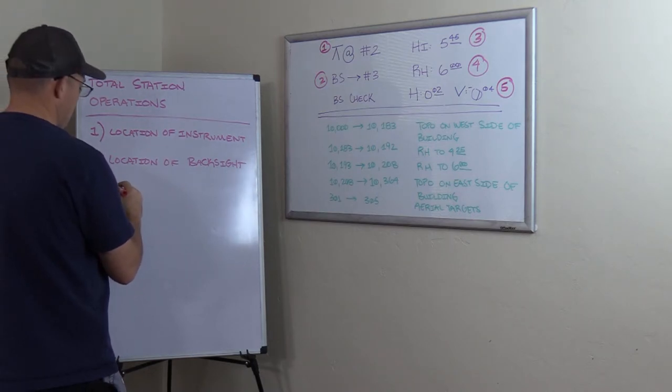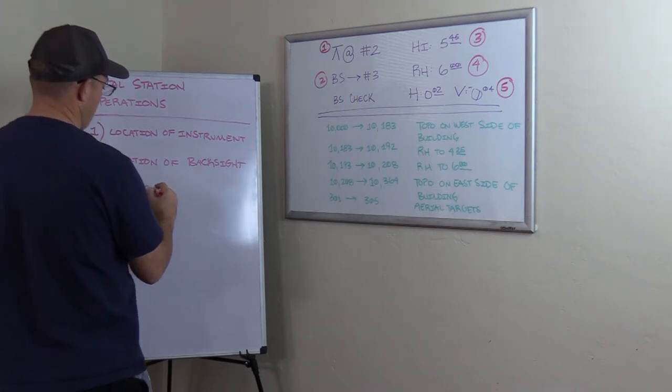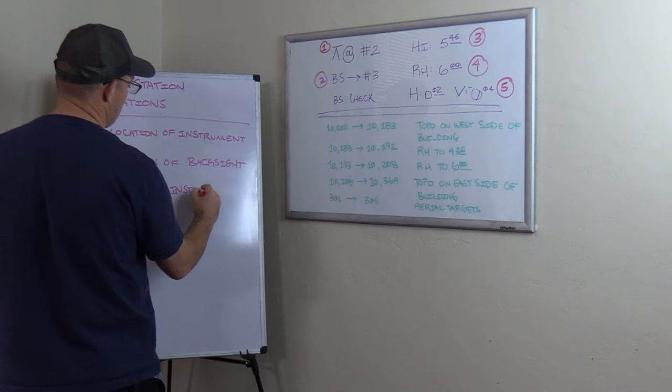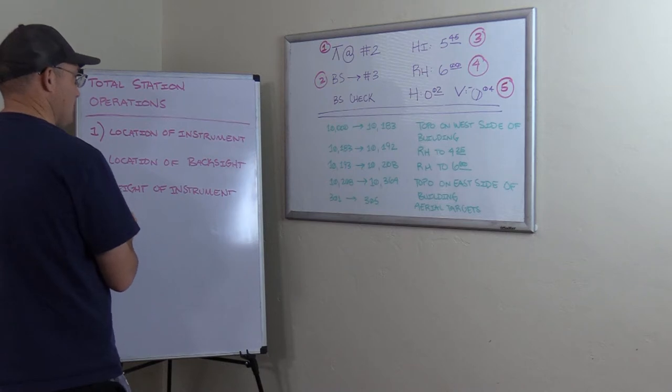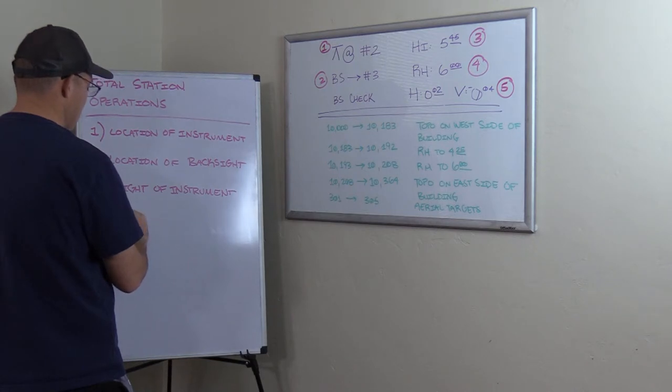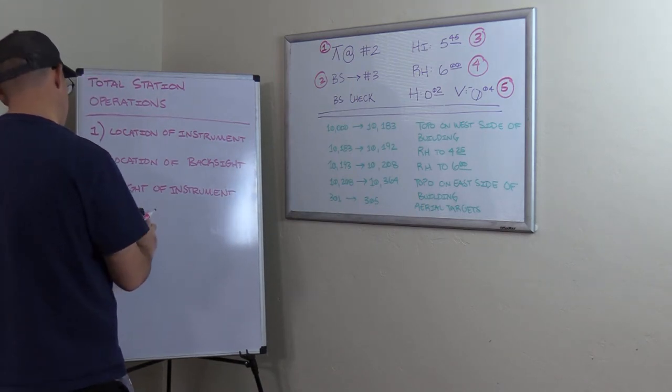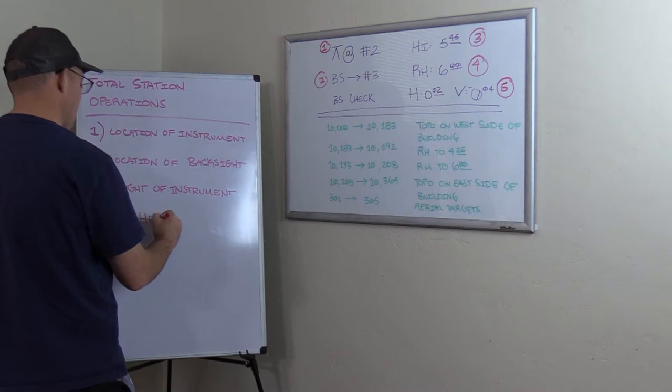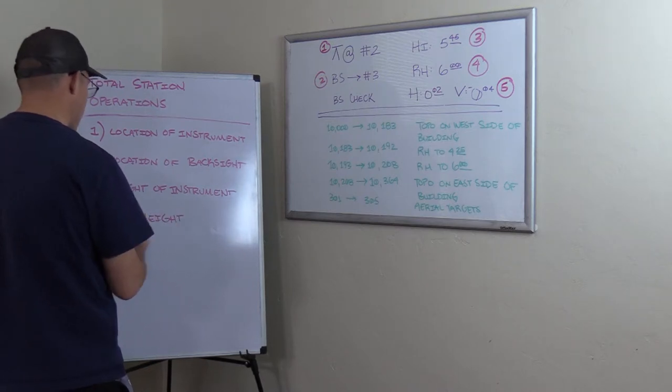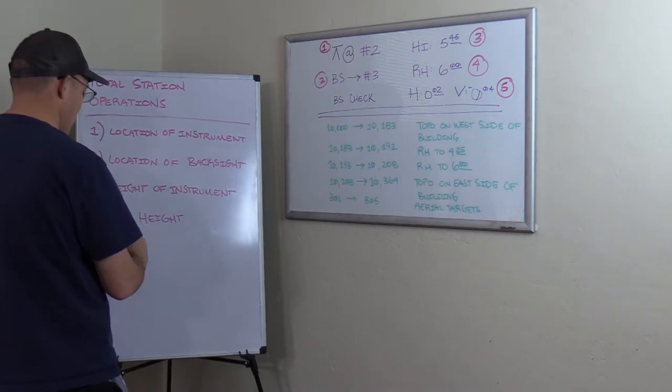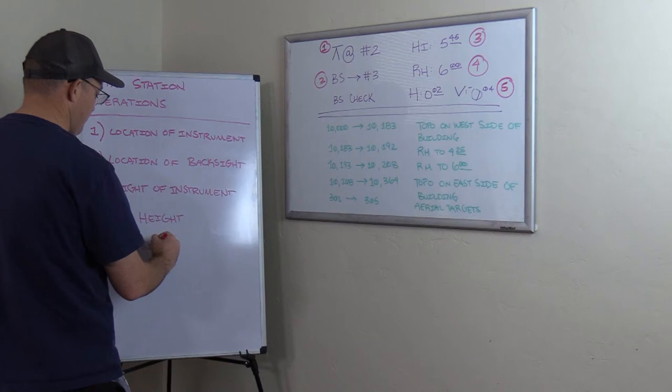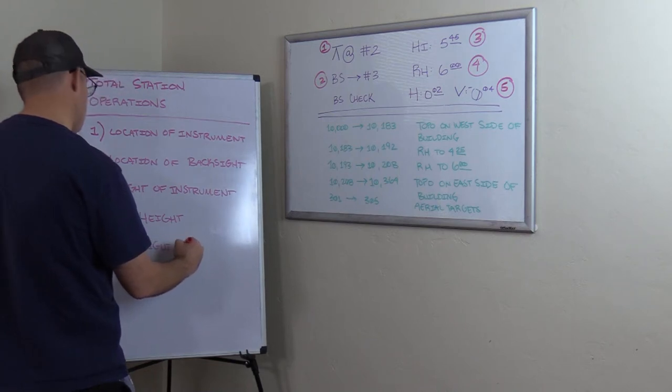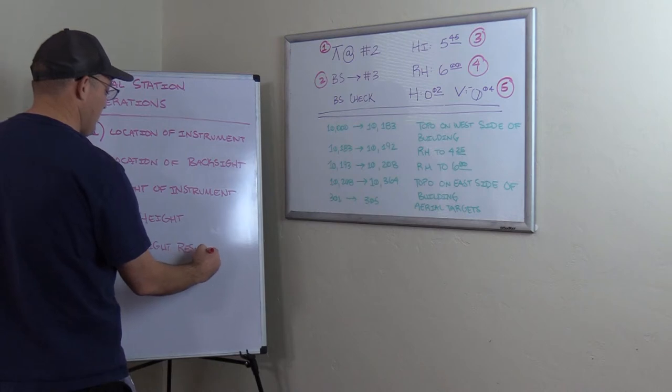And I need to do another video where I just walk you through how the total station uses this math, or your data collector uses this math to coordinate values on your foresight points. So I need to try and remember to do that. And we have the rod height. Now some people call it a target height, but I like to call it the rod height. And then finally, we have number five, we have the back site check results. So that's what we write down for the station setup at my shop.